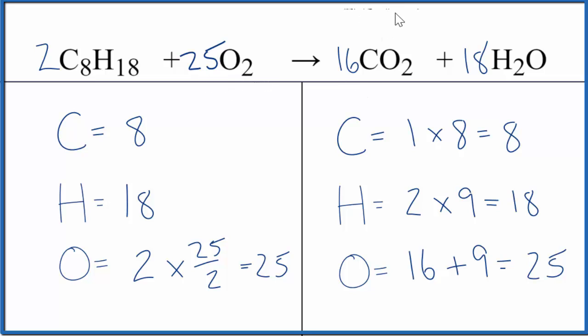If we wanted to write the states for the combustion of octane, that would look like this. Octane would be a liquid. We have oxygen gas, carbon dioxide gas, and then water, because this is exothermic. Combustion reactions are exothermic, it'd get hot, and water, that would be a gas, at least initially.